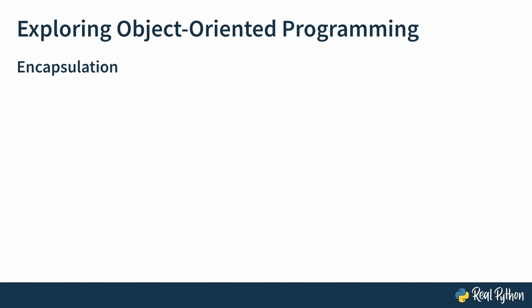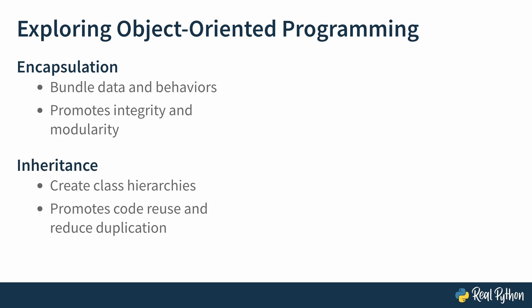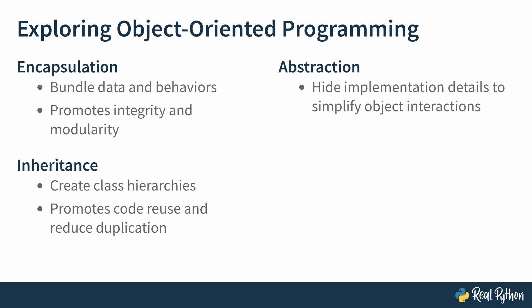Encapsulation allows you to group data and behaviors into a single unit — an object. The object has the data it needs, and that data should only be modified by methods exposed by the object, which would be part of its behavior. This promotes data integrity and modularity. Inheritance is a means of code reuse. You can create new classes based on existing ones, forming class hierarchies. Child classes inherit the methods and attributes of their parents and can add to or modify them, reducing code duplication. Abstraction is the practice of hiding implementation details, exposing only the essential functionality of an object, thereby simplifying interactions.